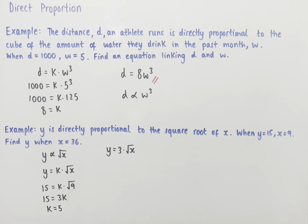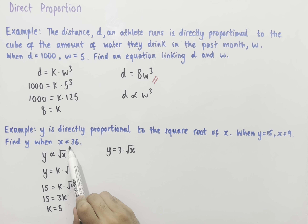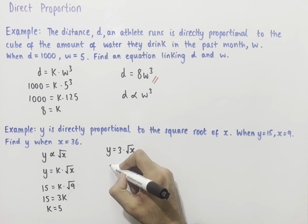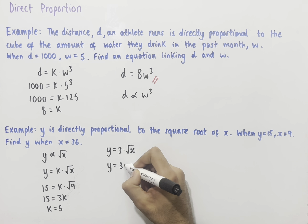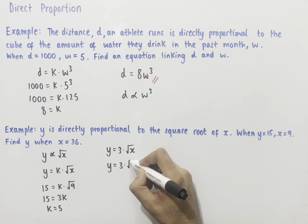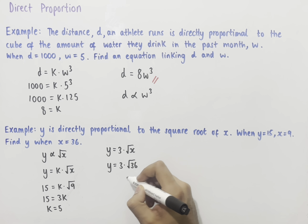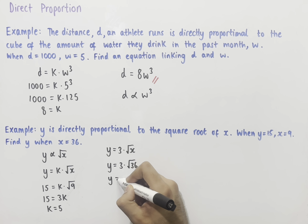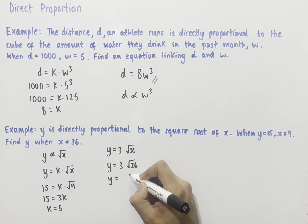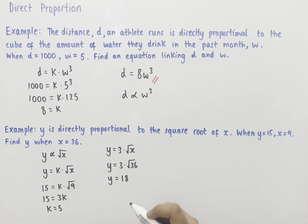The question asks us to find y when x equals 36. Substituting x equals 36 into the equation gives y equals 5 times the square root of 36. The square root of 36 is 6, so y equals 5 times 6, which is 30. This is our final answer.